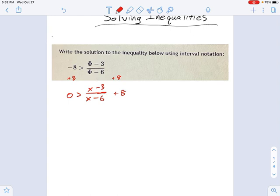So x minus 3 over x minus 6 plus 8. We can do better than that. We can turn this into 8 times x minus 6 over x minus 6, so I have common denominators.